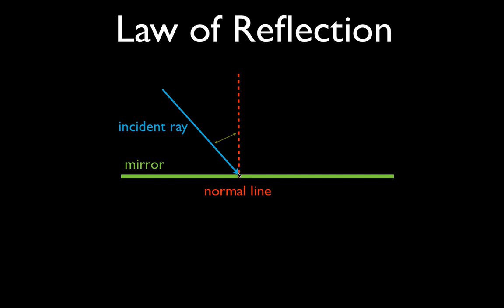The next thing we have is this angle right here — it is between the normal line and the incident ray, so we call it the angle of incidence. Notice it is measured from the normal line to the ray, not from the mirror to the ray.